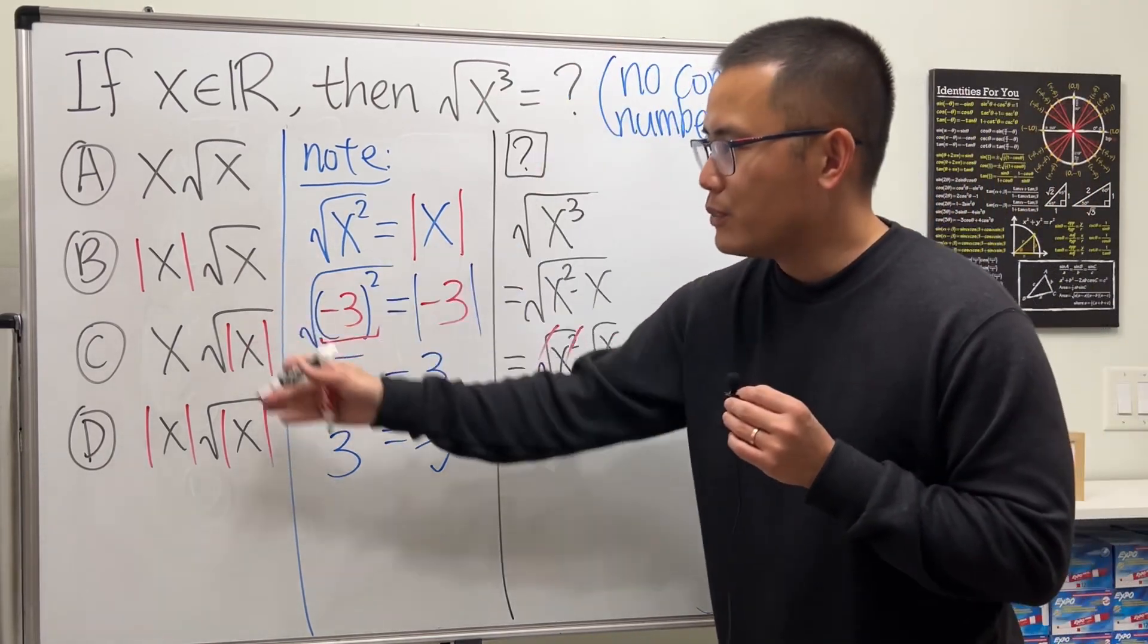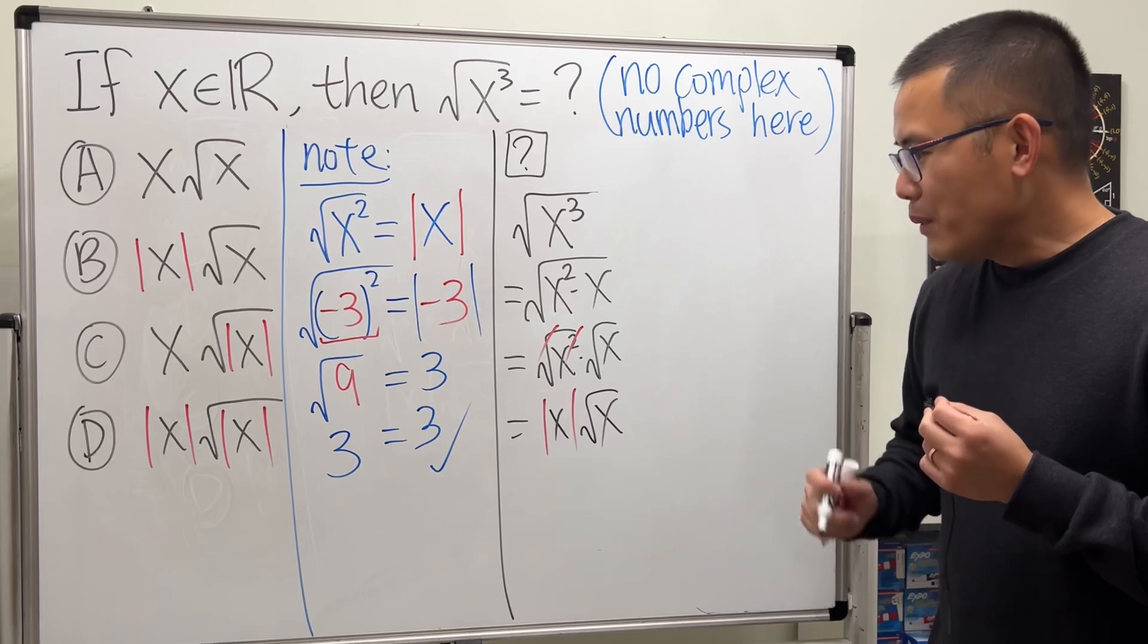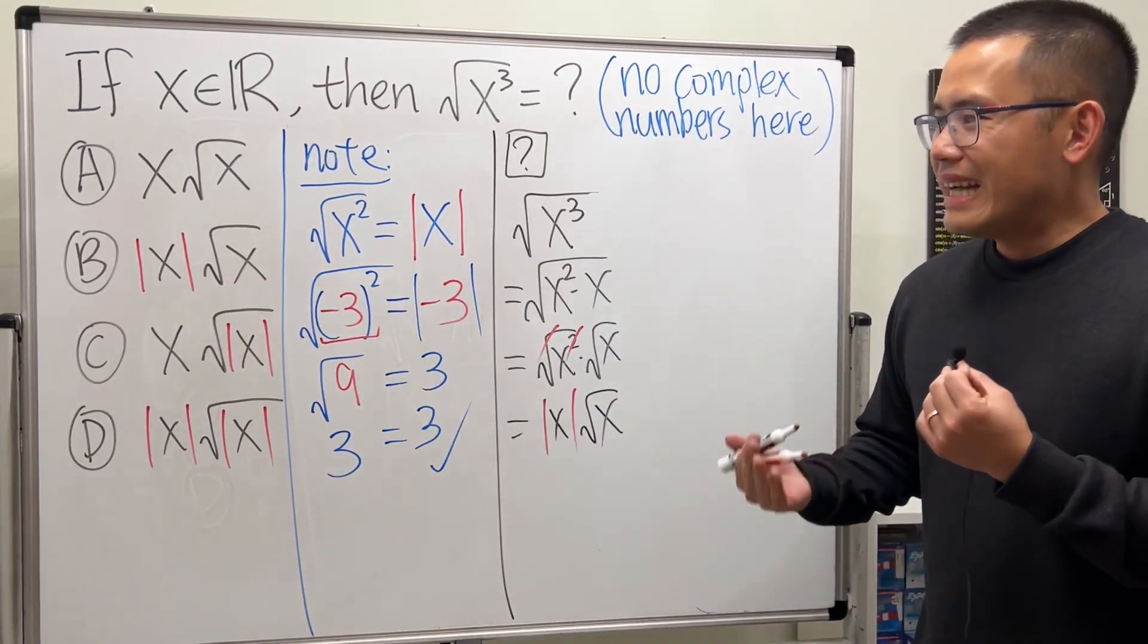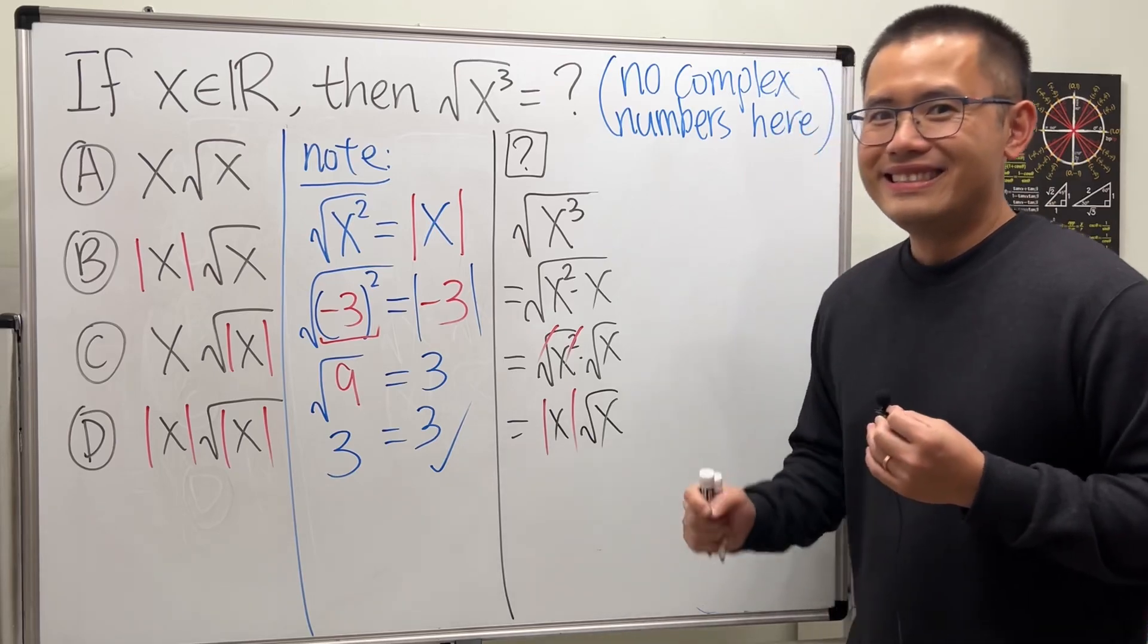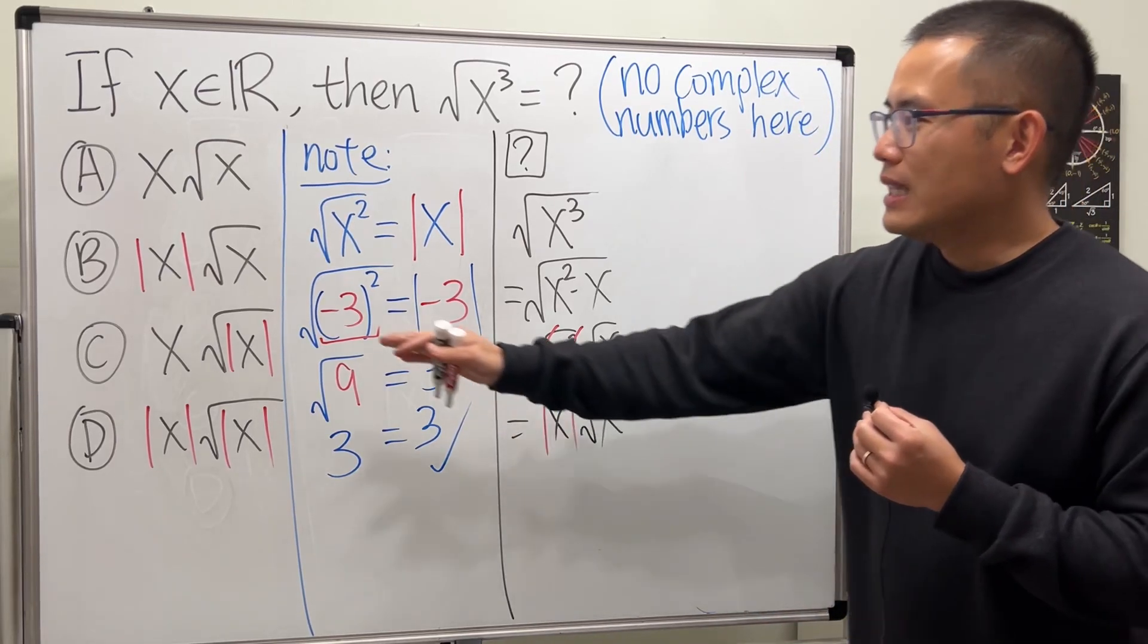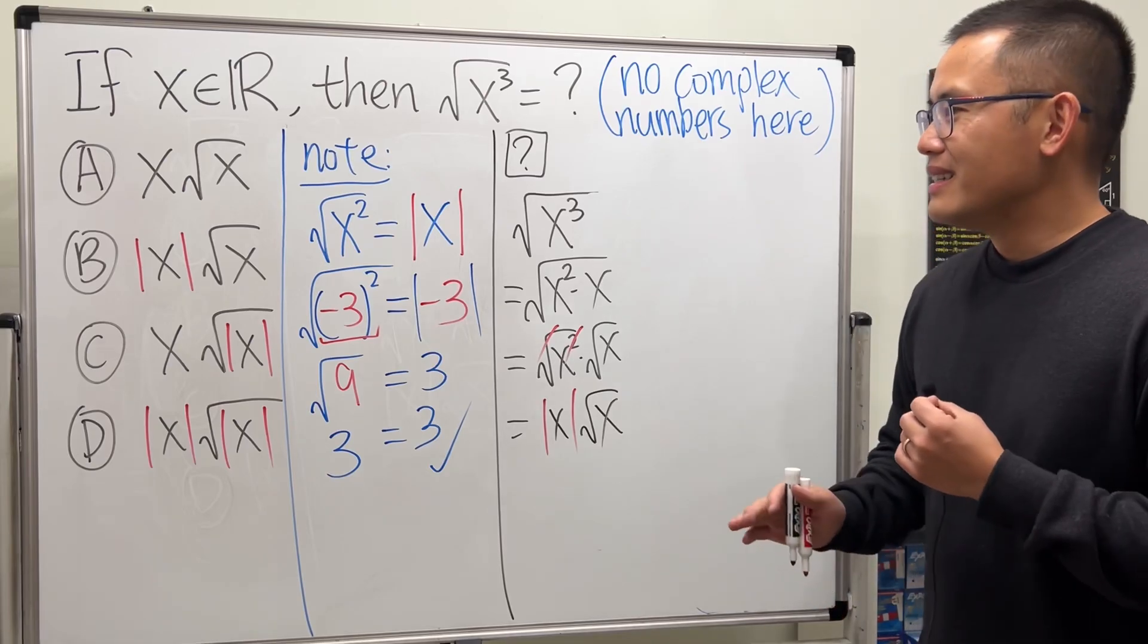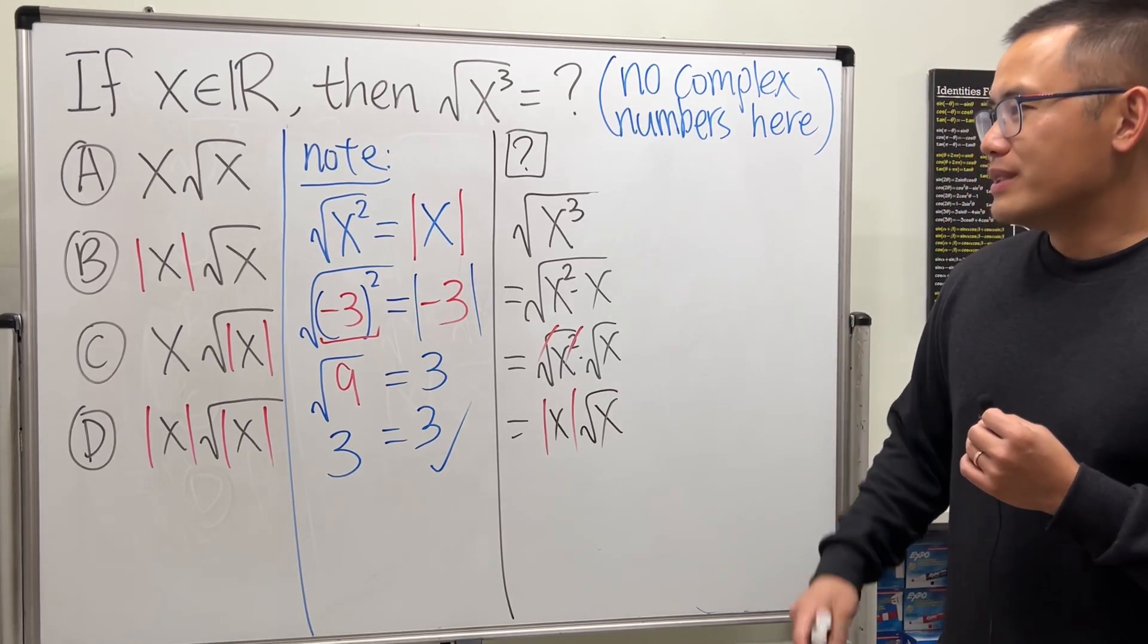So the answer should be B, right? Well, I will tell you if you put down B, it's not that wrong. If you use the absolute value right here, it's technically okay. Yeah, okay, here is the reason why.